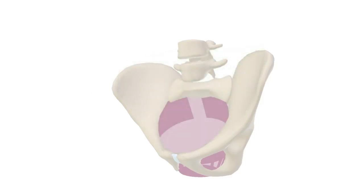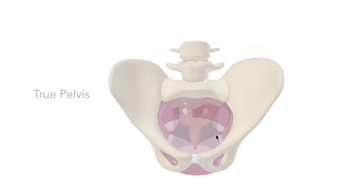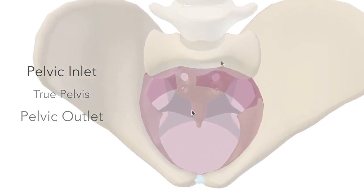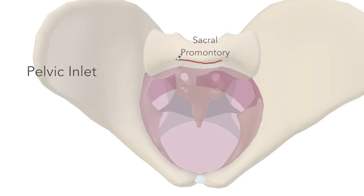We call the pelvic inlet and the pelvic outlet. Most posteriorly, we have the promontory of the sacrum, next the ala of the sacrum, which is Latin for wings.